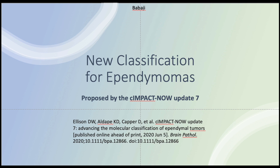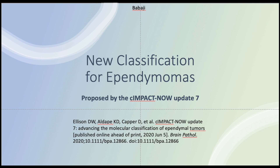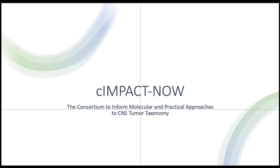Hello, welcome to this overview of the new classification for ependymomas proposed by the C-Impact Now group, which was published in the Journal of Brain Pathology earlier this year. This is published as an Update 7. The C-Impact Now group is the consortium to inform molecular and practical approaches to the CNS tumor taxonomy, created under the sponsorship of the International Society of Neuropathology.